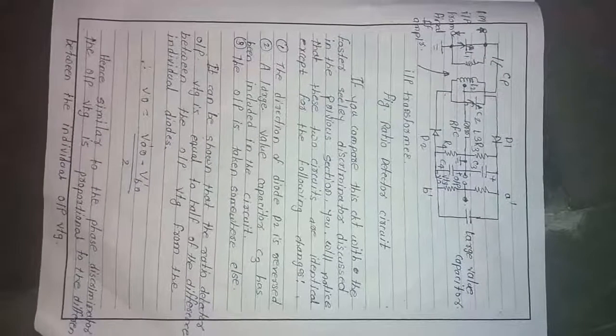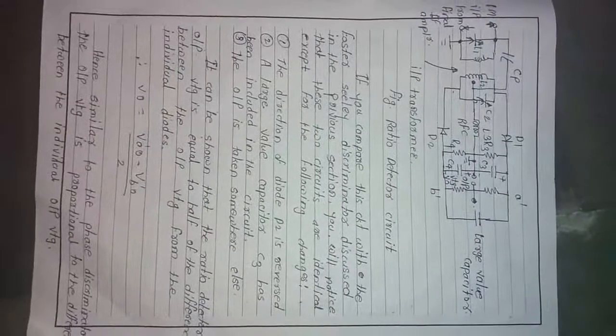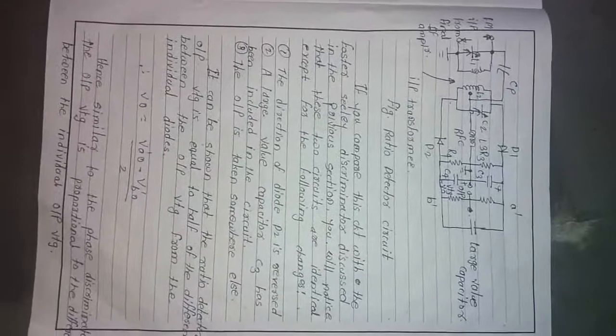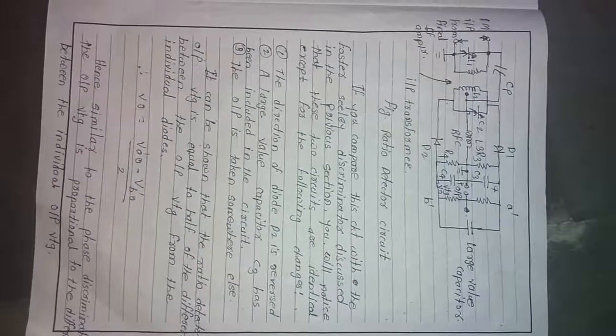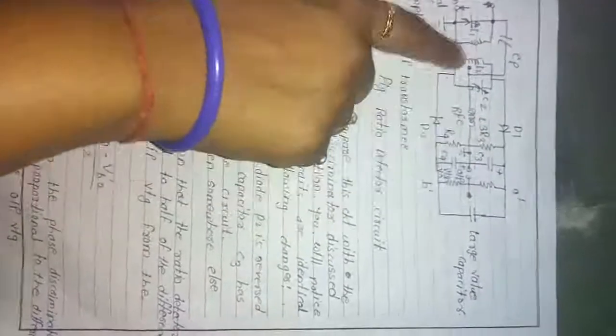Good afternoon. Today we are going to study analog communication — specifically the FM detector. This part covers the ratio detector, which is the remaining part related to FM detectors. Here I have drawn the circuit diagram related to the ratio detector.